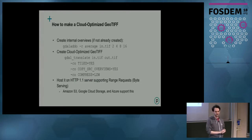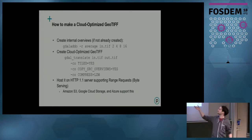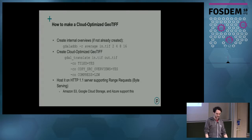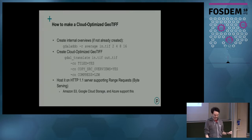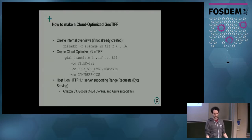If you're generating imagery and want it in Cloud-Optimized GeoTIFF format, there are basically two things to do. First, if you don't already have overviews built, use GDAL addo (add overviews) to build them — just put your image path in the command and run it. It modifies the image directly; an external overview won't work. Second, use GDAL translate to tell it you want tiling, copy the overviews, and use LZW compression. You can also use deflate, but some things aren't fully compatible with deflate.